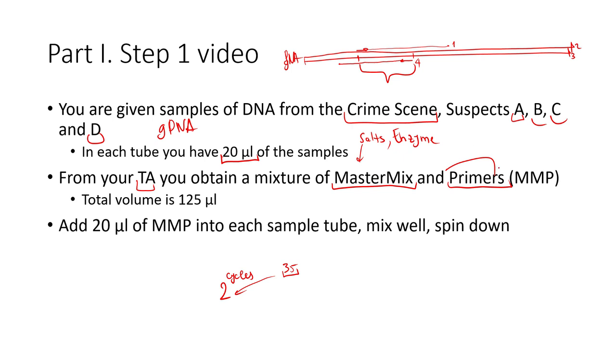So here is why we have the primers and the master mix. We combine them together and obtain MMP mixture. This will be given to you by your TA and it is 125 microliters. What you are going to do is add 20 microliters of MMP to each of your samples.